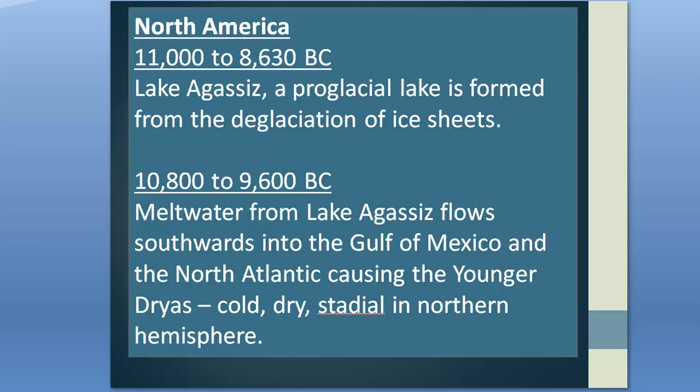Approximately 200 years later, meltwater started to accumulate in the Red River Valley of North Dakota and Minnesota. As the water reached the top of the divide to the south, it drained into the ancestral Minnesota-Mississippi river system. At the same time, the Laurentide ice sheet was located at the current US-Canadian border — known as the Lockhart Phase. Lake Agassiz was estimated to be 758 feet deep, with the southern boundary blocked by the Big Stone Moraine.